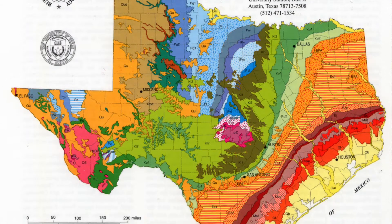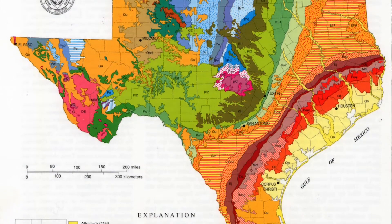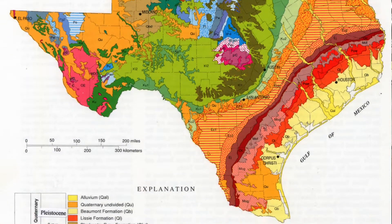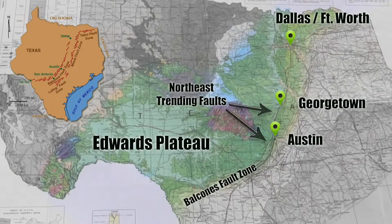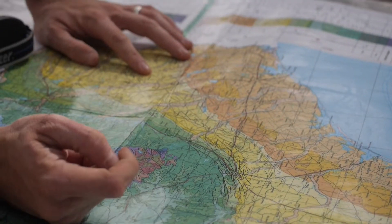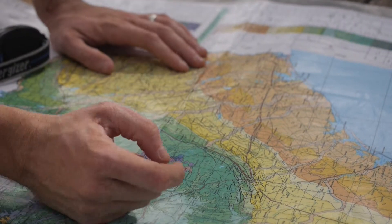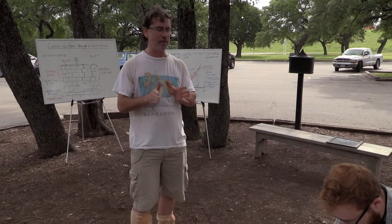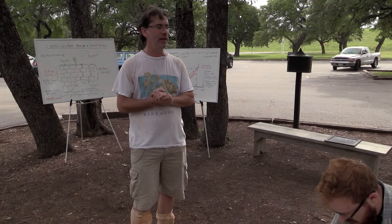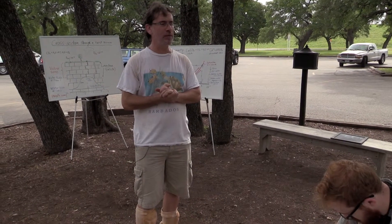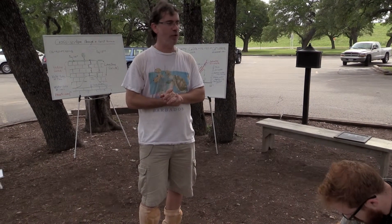The Edwards Plateau is bounded to the south and east by the Balcones Fault Zone, wrapping from west Texas and making the turn going north up through the Dallas-Fort Worth Metroplex. That whole green expanse is the Edwards Plateau — limestones that formed in the ocean during the Cretaceous period. The caves we'll be looking at today formed in those limestones, about 100 to 110 million years before present.